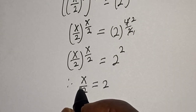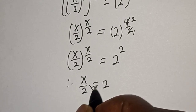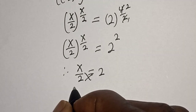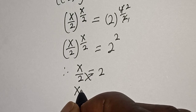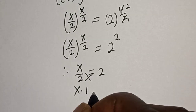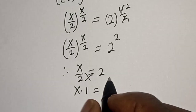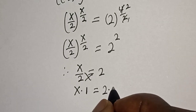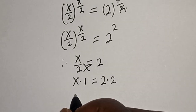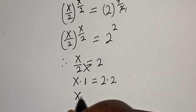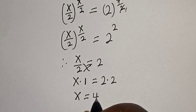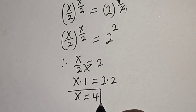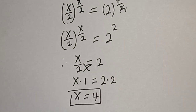Now let's cross multiply. We have s multiplied by 1 is equal to 2 multiplied by 2, so s is equal to 2 times 2, that is 4. This is the final answer. We can check to confirm if our answer is right or wrong.